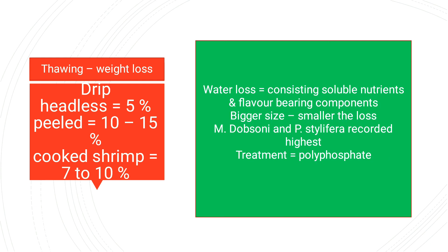Species such as Metapenaeus dobsoni and Parapenaeopsis stylifera have recorded the highest thawing weight loss. The treatment for this is polyphosphate treatment, which can reduce weight loss in shrimp.